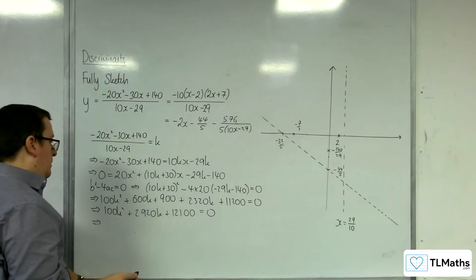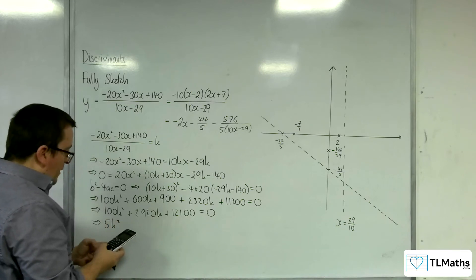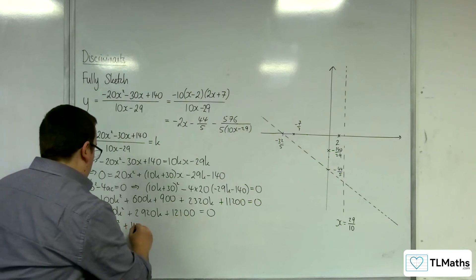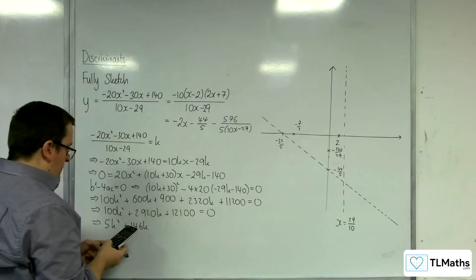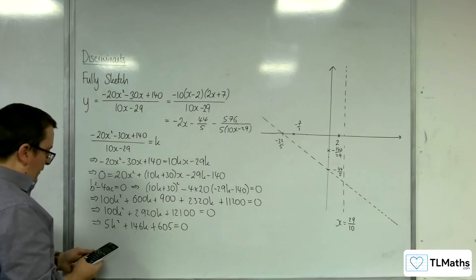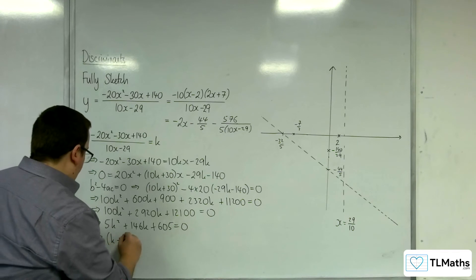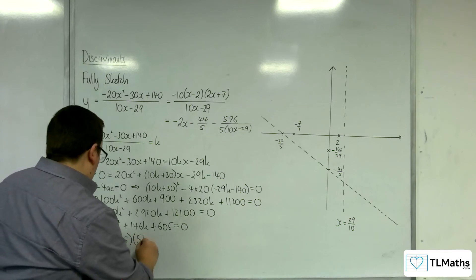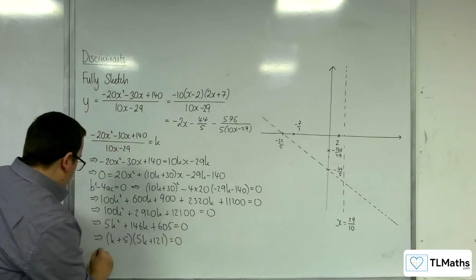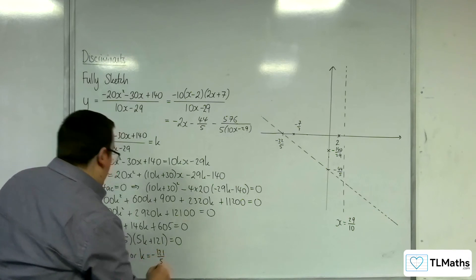So, I divide through by 20 first. I mean, I know I can get my calculator to do this for me. I'm just kind of trying to do it as far as possible. So, 5k squared plus 146k plus 605 equals 0. I've divided through by 20. Now I'm going to put it in my quadratic solver. 5, 146, and 605. So, we get k plus 5, and 5k plus 121. So, k equals minus 5, or k equals minus 121 over 5.